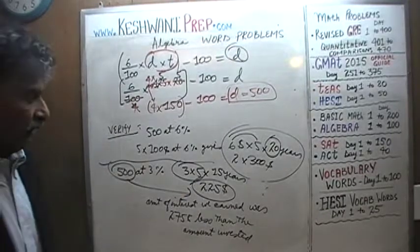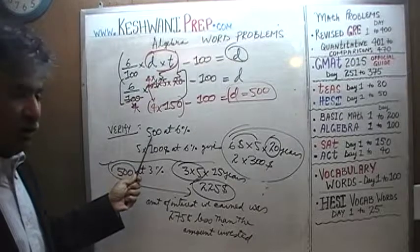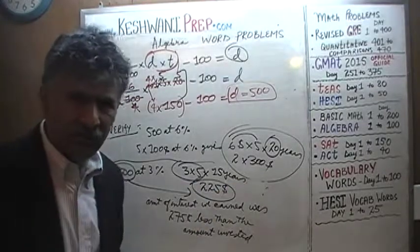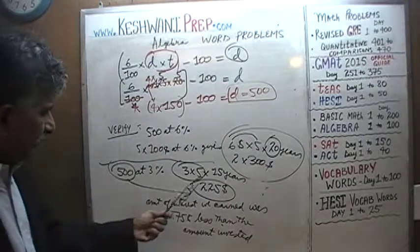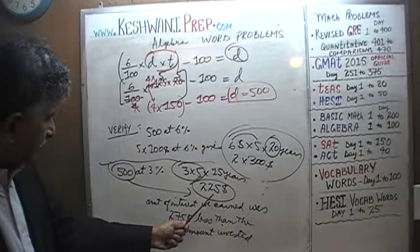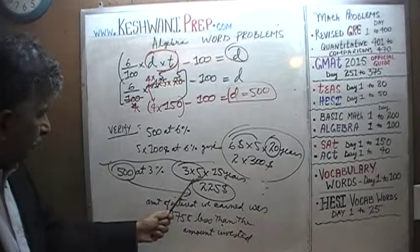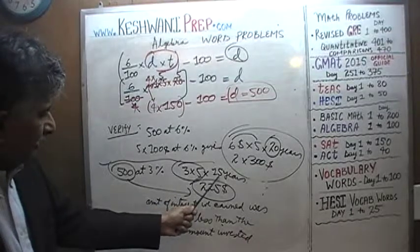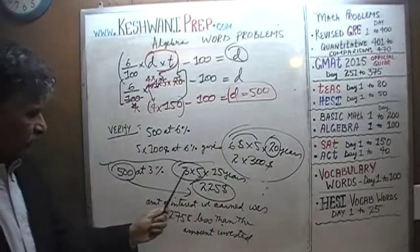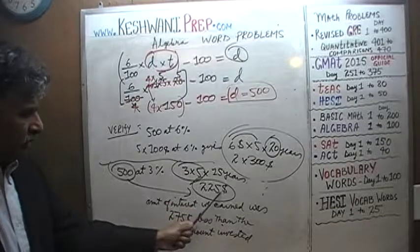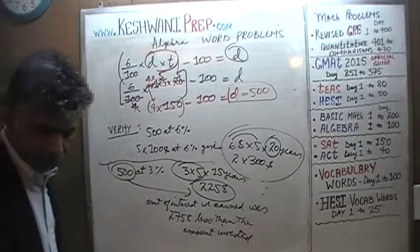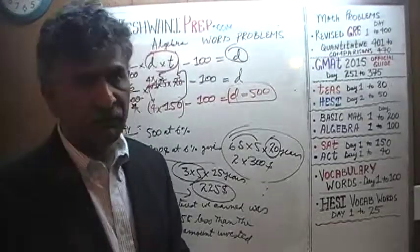It makes sense. With the incorrect answer of $50, none of this would have worked out — you would have needed to keep the money for 200 years in the first account and 150 years in the second, and the interest amounts would not have matched the conditions. That verification failure is how you would know your answer is wrong.